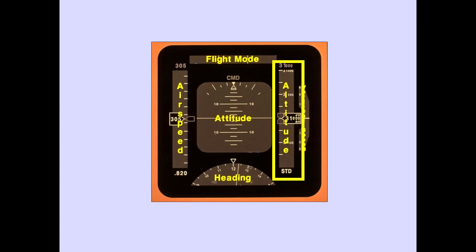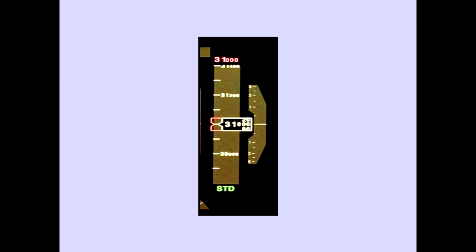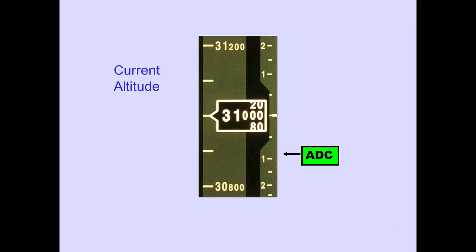Now let's look at the altitude indication. The altitude indication is located on the right of the PFD. The moving tape indicates current and selected altitudes. Current altitude is always displayed in the box at the center of the altitude tape. The selected air data computer provides this information.